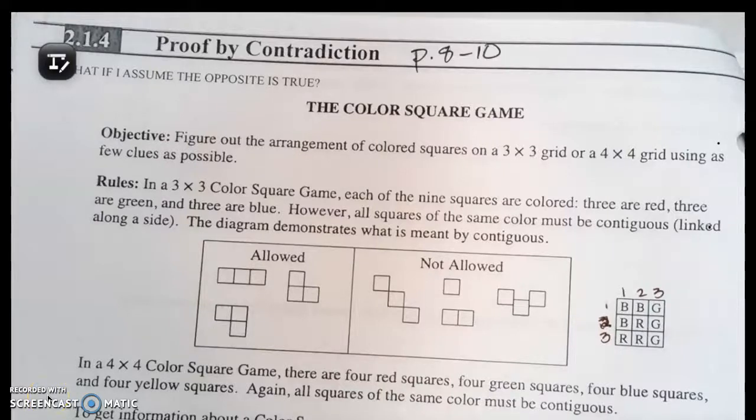Section 214 is titled Proof by Contradiction. We're going to be looking at pages 8 through 10 today, and we're going to be asking the question: what if I assume that the opposite is true?